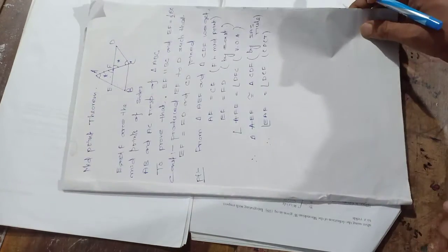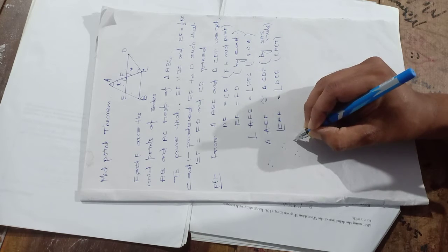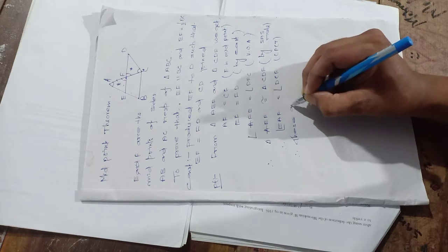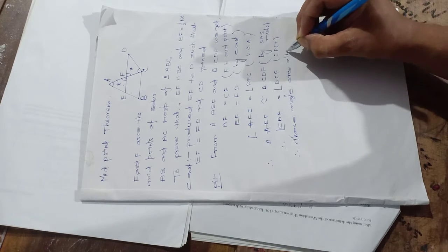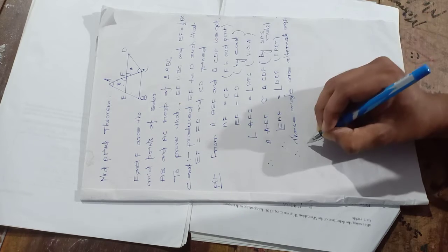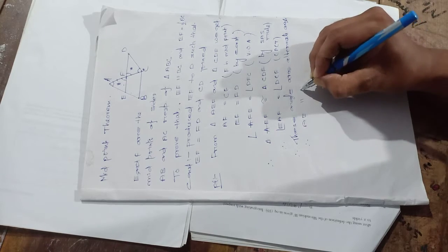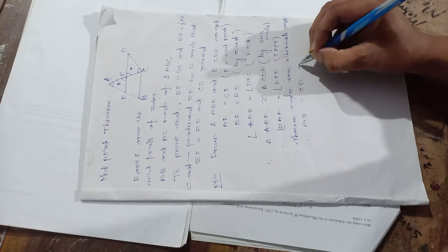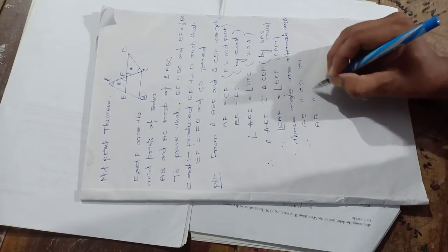Since these two angles are alternate angles, therefore we can say that AE is parallel to CD. And since AE is part of AB, we can say AB is parallel to CD.